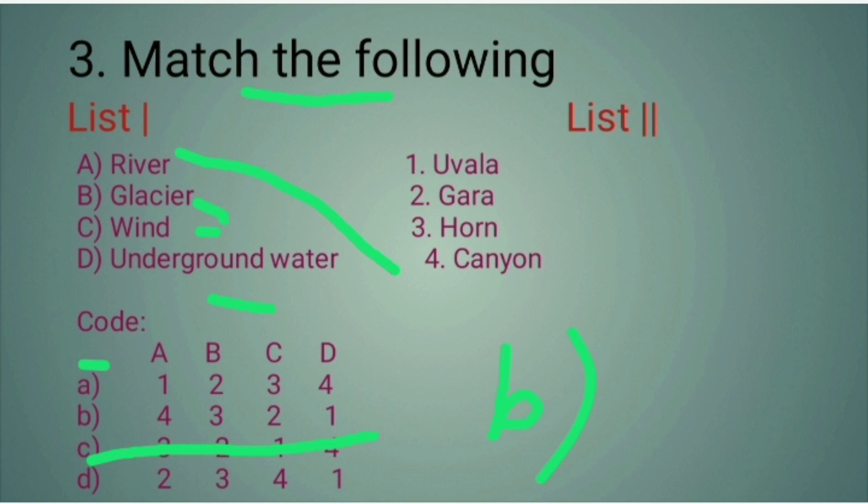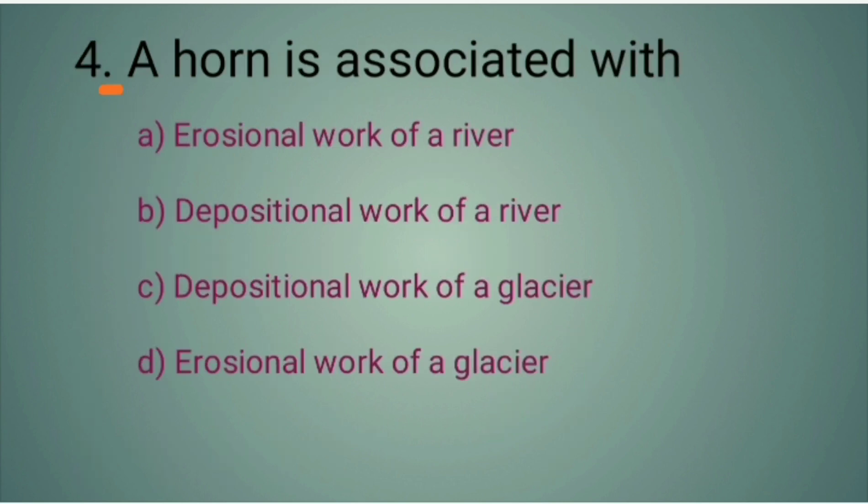Question 4: A horn is associated with what? Option A: Erosional work of a river. Option B: Depositional work of a river. Option C: Depositional work of a glacier. Option D: Erosional work of a glacier. The answer is D. A horn is associated with the erosional work of a glacier.